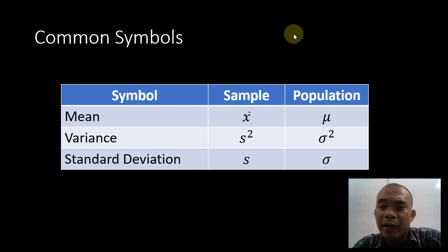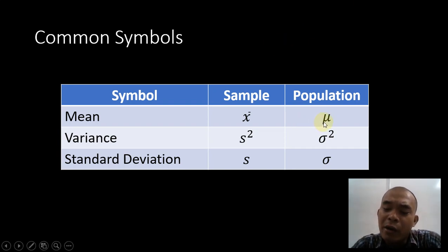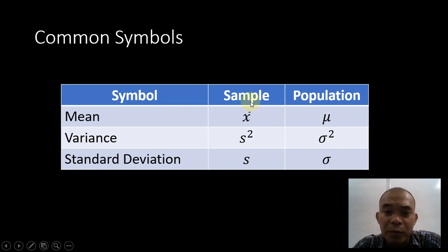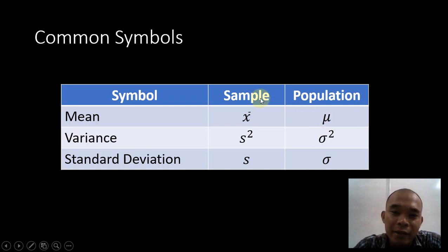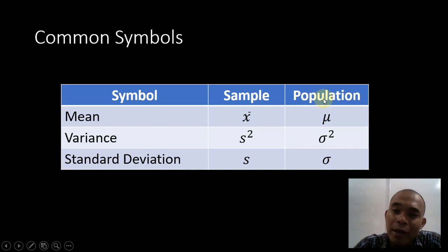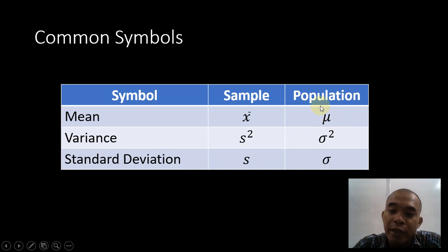As a mnemonic, how are we going to identify if a symbol is for the population or the sample? It is very easy. The mu looks like the letter U. The question is, can you find the letter U in the word 'sample'? No, you cannot. However, in the word 'population,' you can simply find the letter U. So this symbol is part of the symbols for the population.